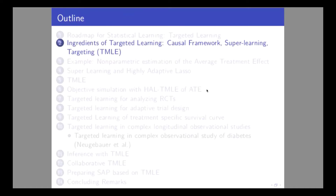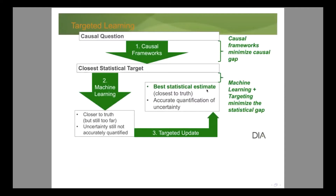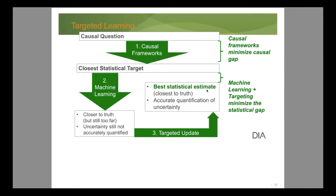What are the ingredients of targeted learning in a schematic sense? If we care about causal effects, we first use causal models and identification results to define the closest statistical target parameter that equals the causal quantity under certain, typically non-testable, assumptions. The simple example we'll use is where we observe on every subject: covariates W, a binary treatment A, and a binary outcome Y, such as death. We might care about the average treatment effect — for that, we need to learn the probability of the outcome as a function of treatment and covariates, where machine learning is needed.